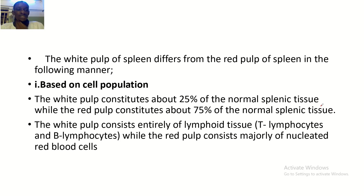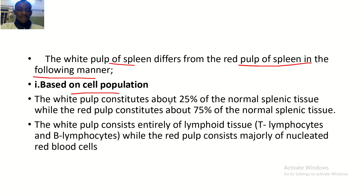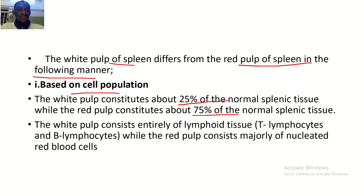Based on cell population, the white pulp of the spleen constitutes about 25% of the normal splenic tissue, while the red pulp constitutes about 75% of the normal splenic tissue. So it's obvious that the red pulp is more than the white pulp.